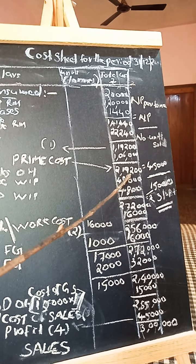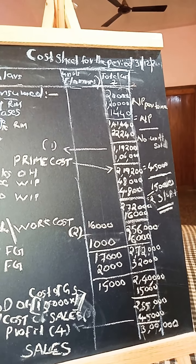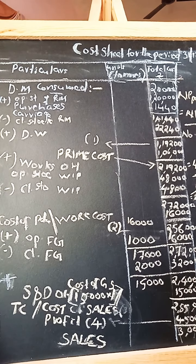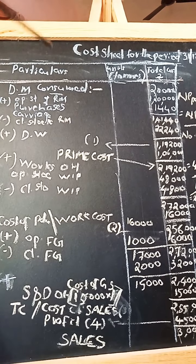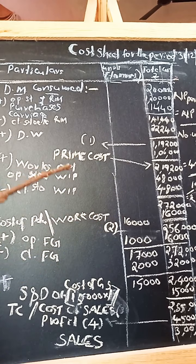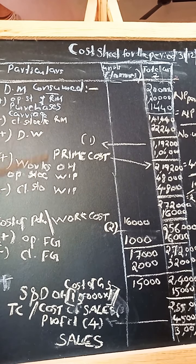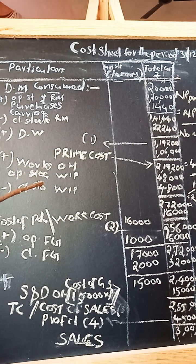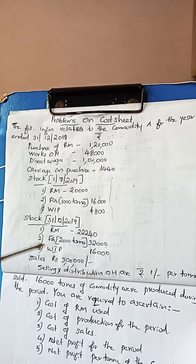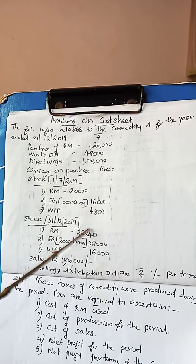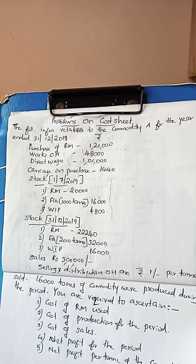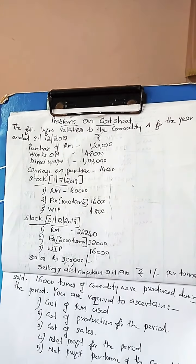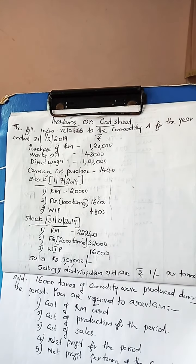Prime cost is Rs. 2,19,200. Add works overhead of Rs. 48,000, which is directly given in the question. If there is any information regarding work-in-progress, that amount is to be adjusted along with the works overhead. In this question, there is an opening stock of work-in-progress of Rs. 4,800, and a closing stock of work-in-progress of Rs. 16,000. Adjust this amount together with the works overhead to arrive at works cost or cost of production.